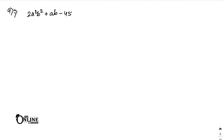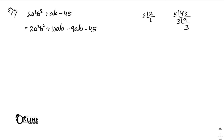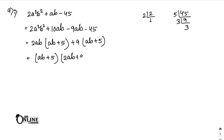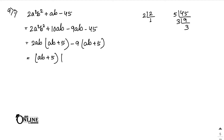Next, sum number 9(1): 2a²b² plus ab minus 45. Factors of 2 are 2 and 1; factors of 45 are 5, 9, 3, 3. Make 1: 5 times 2 is 10, 3 times 3 is 9, and 10 minus 9 equals 1. Write: 2a²b² plus 10ab minus 9ab minus 45. Take out 2ab giving (ab + 5), take out minus 9 giving (ab + 5). Answer: (ab + 5)(2ab minus 9).